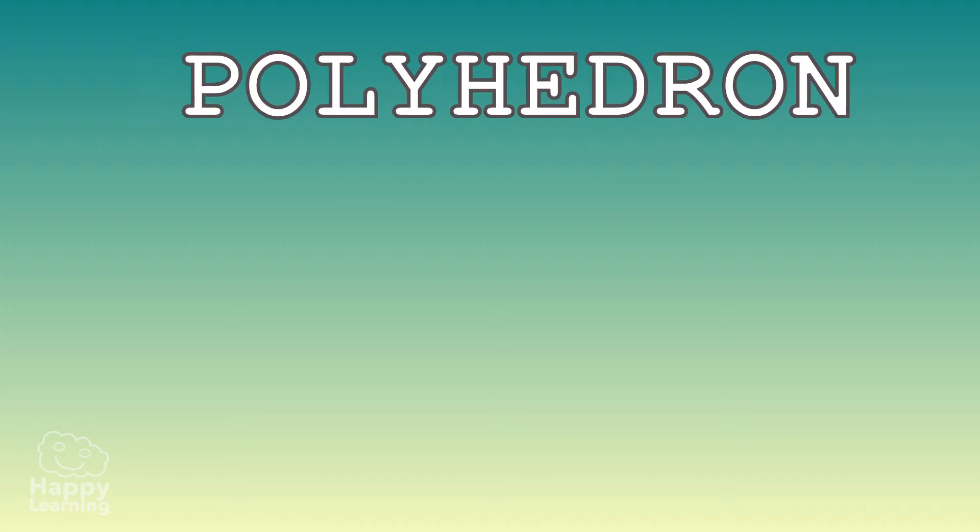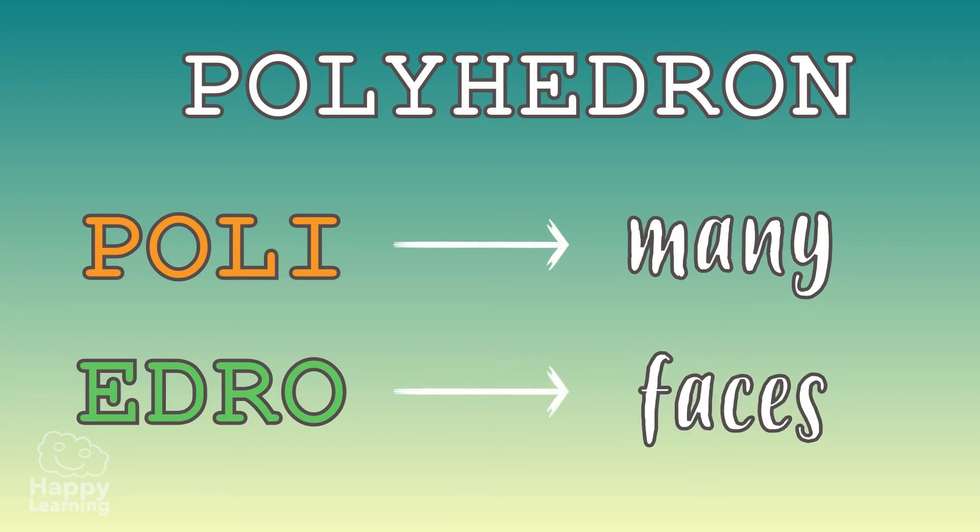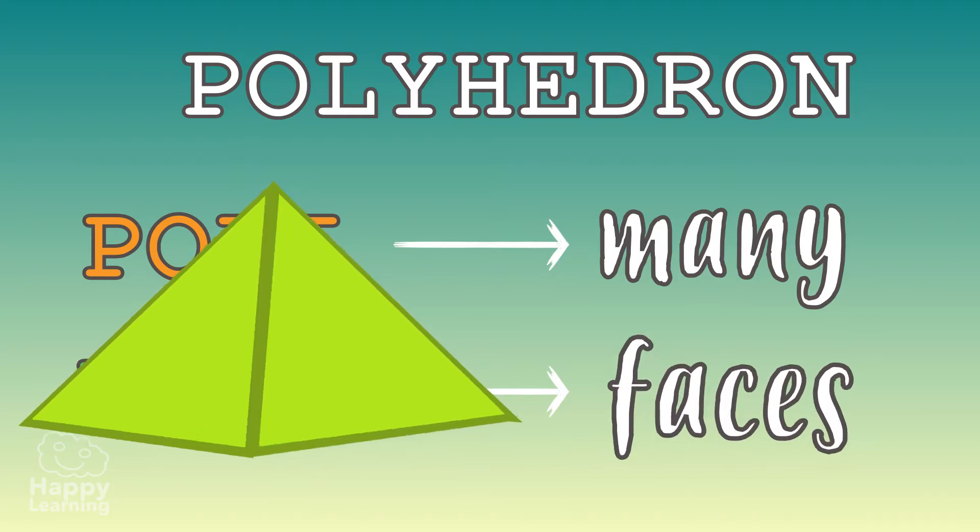The word polyhedron comes from Latin. Poly meaning many, and edro, faces, so its name tells us that polyhedrons have many faces.